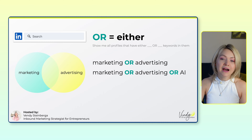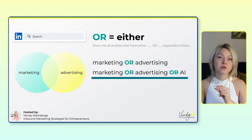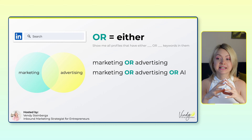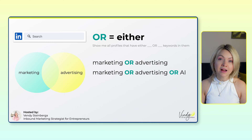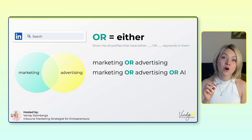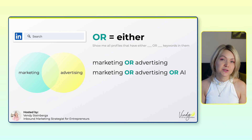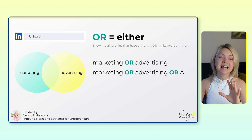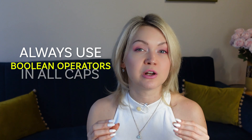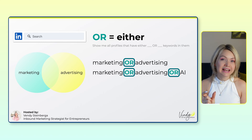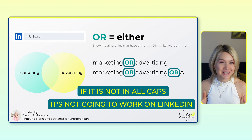Here's another example: marketing OR advertising OR AI. As long as one of these keywords is on a profile, it's going to be delivered in the results. It doesn't have to have all three keywords in one profile — as long as it has, for example, AI on it, it's going to be delivered in the search results. This is our first operator, and it's very important to highlight that you must always use Boolean operators in all caps. You can see that we have a capital OR. If it is not in all caps, it's not going to work on LinkedIn — that's one of the most common mistakes people make. So make sure you're always capitalizing your Boolean operators.